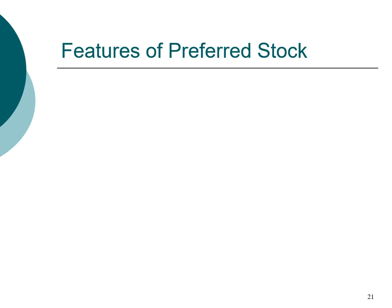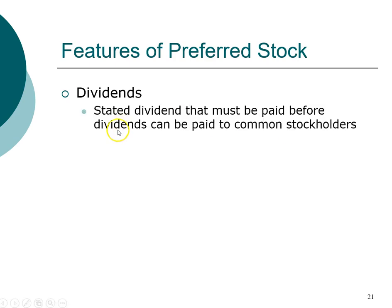Another type of stock is preferred stock. Preferred stock is an interesting type of security — it's not exactly a bond and it's not exactly a stock. The name 'preferred' comes from the fact that dividends for preferred stockholders must be paid before dividends can be paid to common stockholders — that's why they're called preferred, they get preferential treatment when it comes to dividend payment.